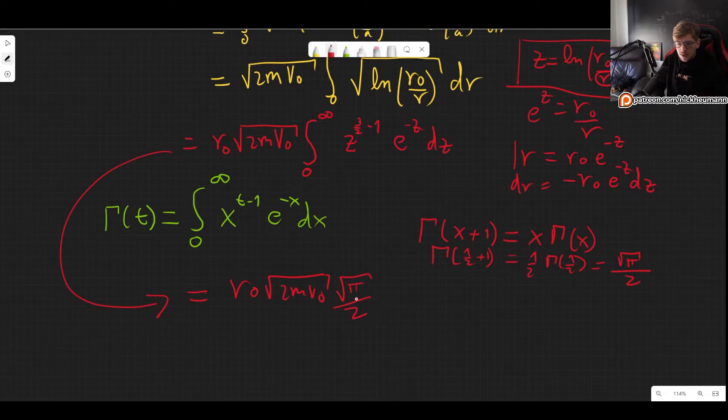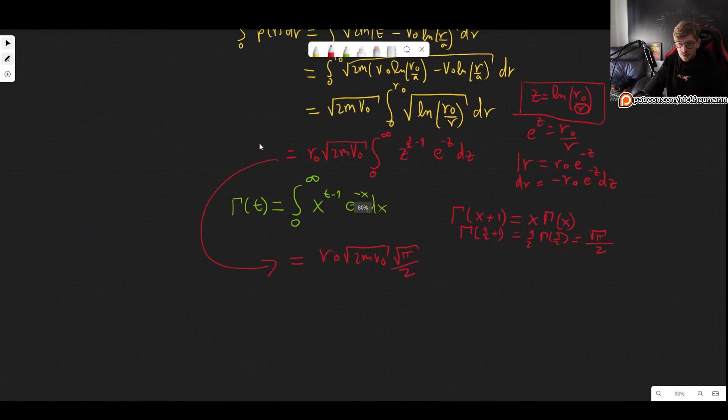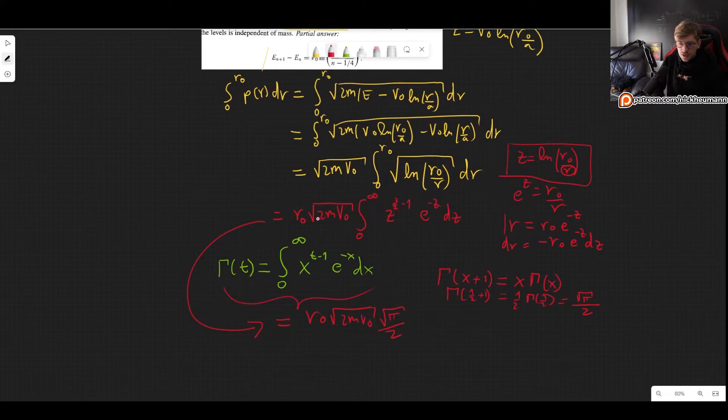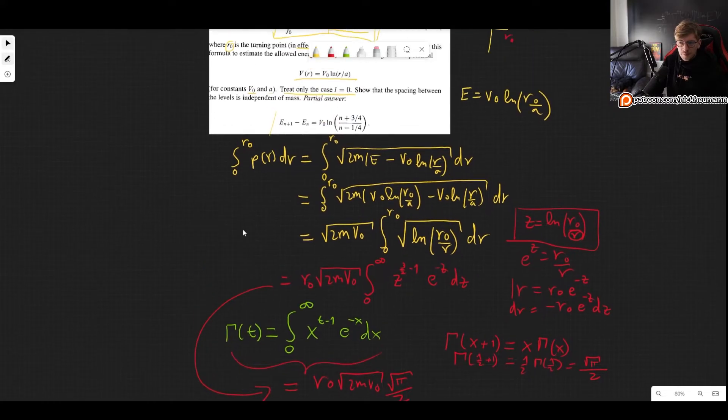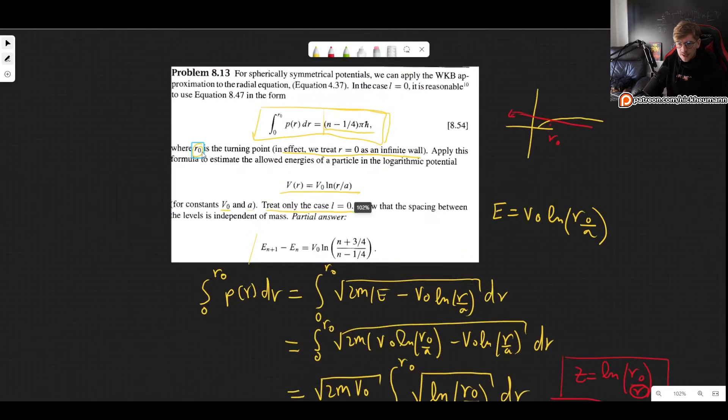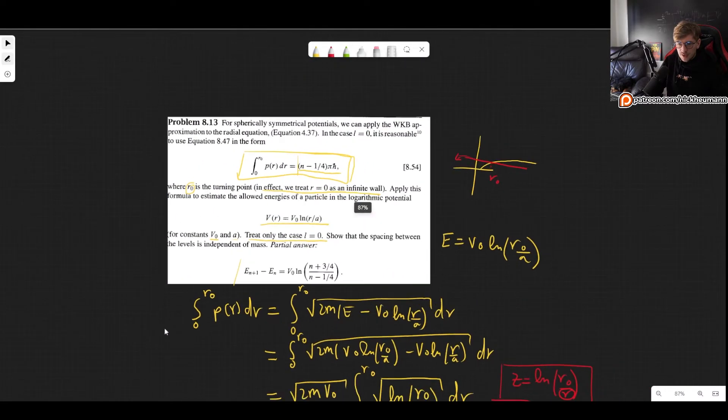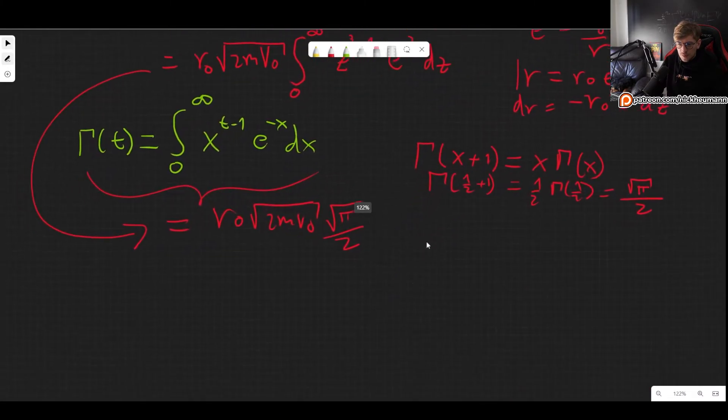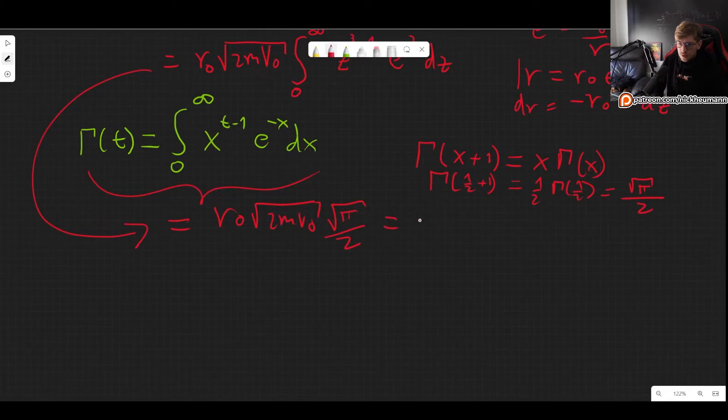Now we need to plug it back in here and set this equal to n, so this is equal to n minus one fourth times pi h bar. And what we want to do is find the energy levels.